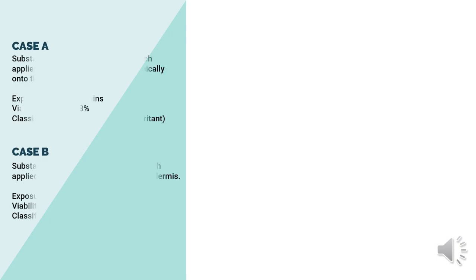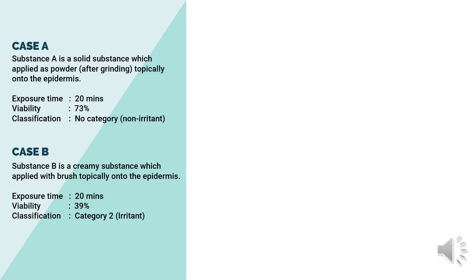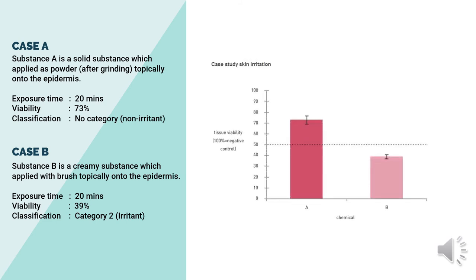Here is a case study involving two different substances in a skin irritation test. Substance A is a solid substance applied as a powder topically on the epidermis, while Substance B is a creamy substance applied with a brush onto the epidermis. Both substances are exposed for 20 minutes. From the graph shown, Substance A has a viability measurement of 72% — classified as a non-irritant. Substance B has a 39% cell viability measurement, which is predicted and classified as Category 2, Irritant, UN GHS.